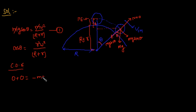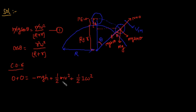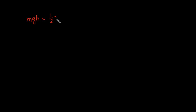At the final instant, the gravitational potential energy is mgH, and the kinetic energy is (1/2)mv² for translational kinetic energy plus (1/2)Iω² for rotational kinetic energy. Since the ball is in rolling motion, there is both translational and rotational motion. So the total energy equation is: mgH = (1/2)mv² + (1/2)Iω².